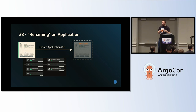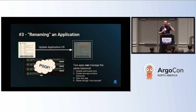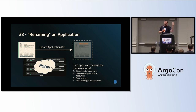Let's look at an example: renaming an application. There is no such thing as renaming an application in Argo CD — it's like renaming any resource inside Kubernetes. If you edit the application custom resource, change the name, and push it, it will actually delete the old application, which will then — if the finalizers are set and prune is potentially enabled — automatically delete all of those child resources.